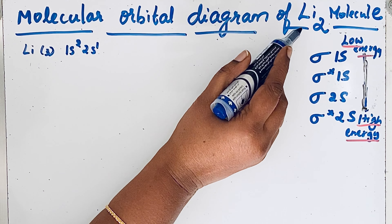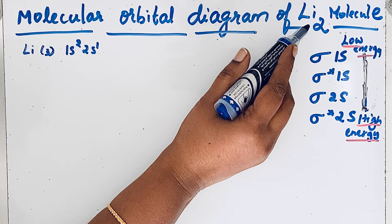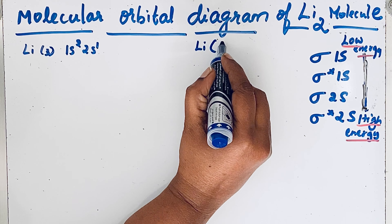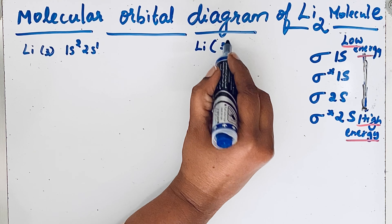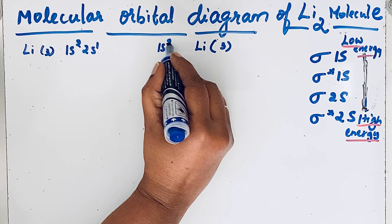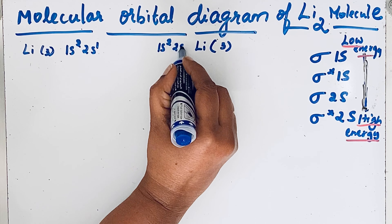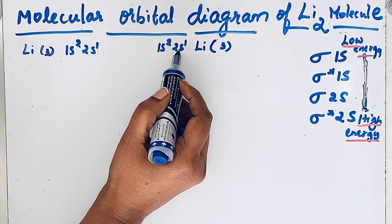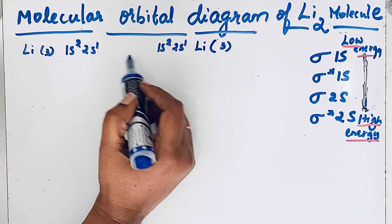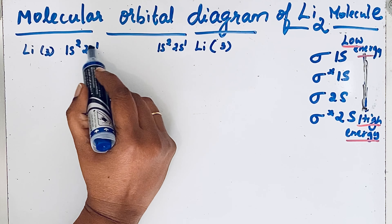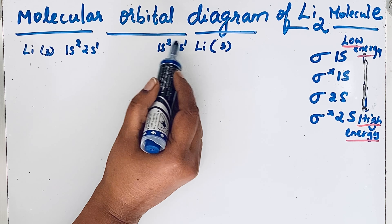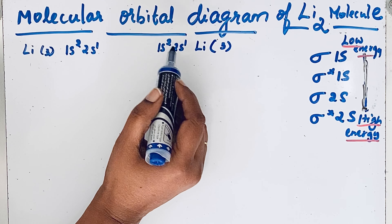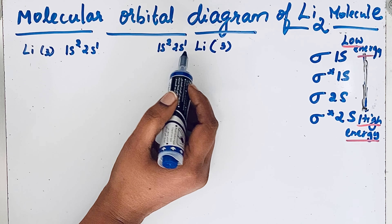Since lithium molecule has two lithium atoms, the other lithium atom also has the configuration 1s² 2s¹. When these atomic orbitals combine we get molecular orbitals. Here three electrons and here three electrons, so the total electrons in the molecular orbital should be six.